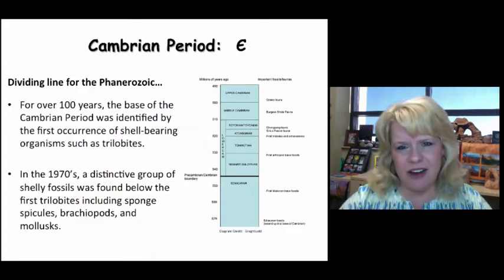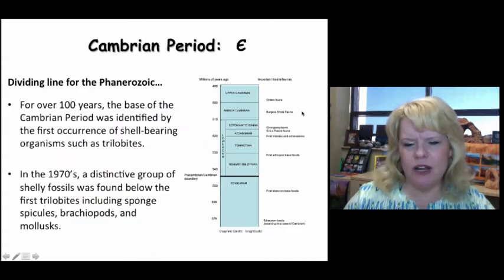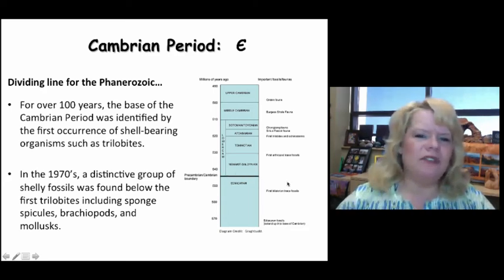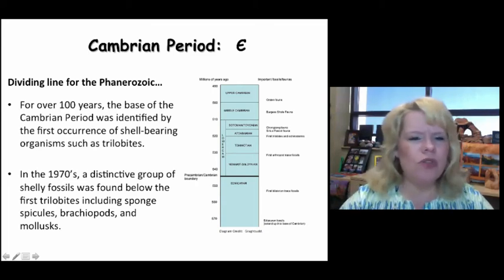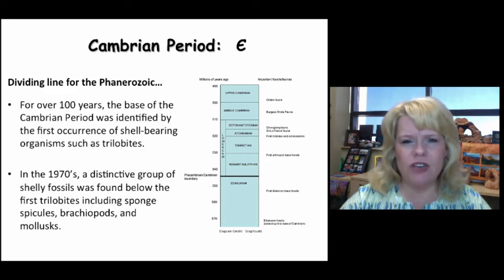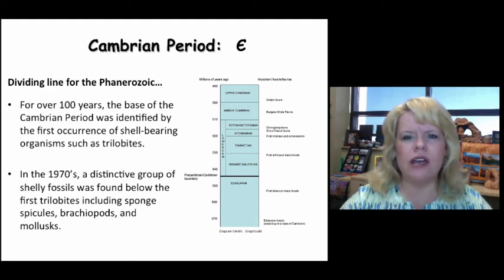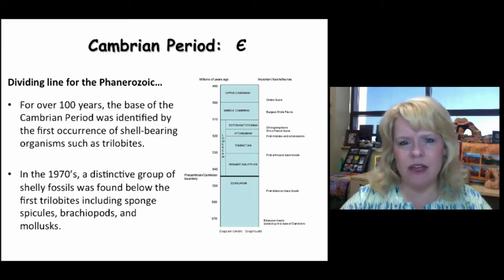So where is that dividing line between pre-Cambrian, Ediacaran, and Cambrian rocks? The Cambrian is divided into three parts: the lower, the middle, and the upper, known as the late Cambrian. If we're talking about early or lower, that means the same thing — the beginning. Middle is self-explanatory, and upper or late mean the same thing — the end of a period.